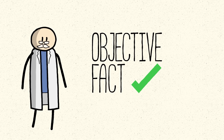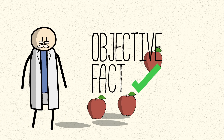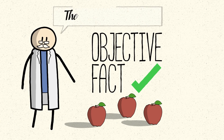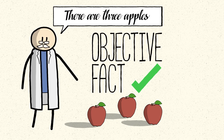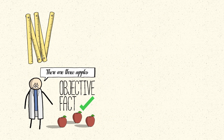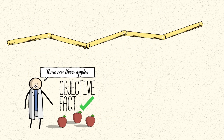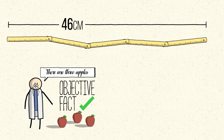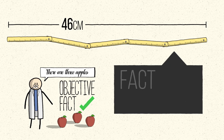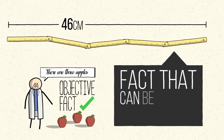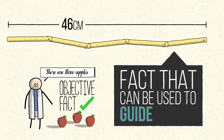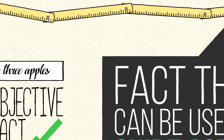What makes a fact objective? While some things are harder to quantify than others, many would agree that an empirical measurement, such as the length of a material object, can be considered a clear example of a fact that can be used to guide action.